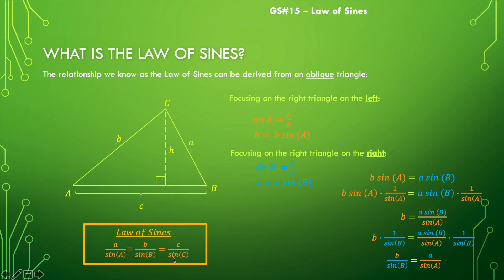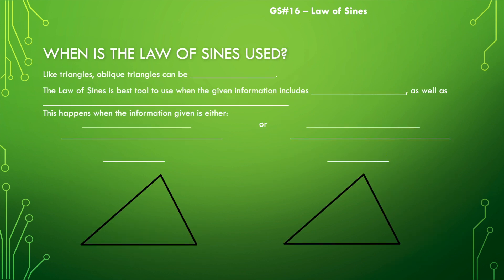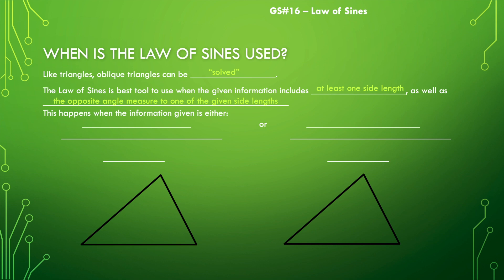So that allows us to do some things we were not able to do before — specifically, we will be able to solve triangles that are oblique triangles. We can't use the Pythagorean theorem because that only works with right triangles, and we're dealing with obliques now. When is the law of sines used? You need to know when to use this tool. It's key when the information given includes a side length and the opposite angle measure — I need a pair like that to use the law of sines. If I don't have a pair like that, I can't use the law of sines.